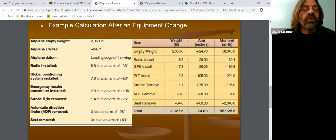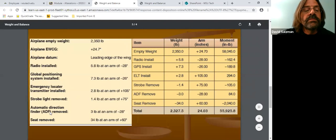And it says I am doing a strobe light removal. Since I'm removing it, it weighs 1.4 pounds. I'm removing it, so that becomes a negative 1.4. So I'm taking it off. So I got a negative 1.4 times station 75, because that's where it's located. Gives us a negative 105. And our ADF is being removed. It weighs 3 pounds, so that would be a negative 3 pounds. And it's located at negative 28. So negative 3 times a negative 28 gives us a positive 84.